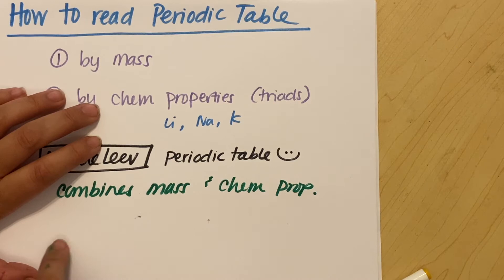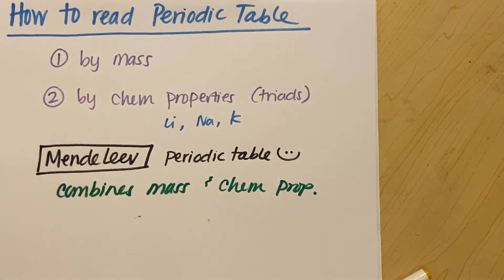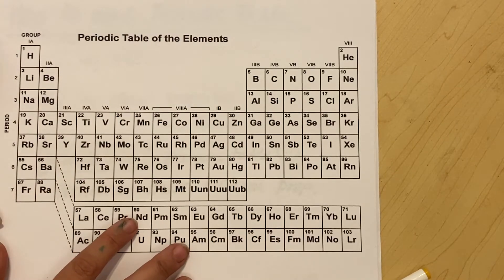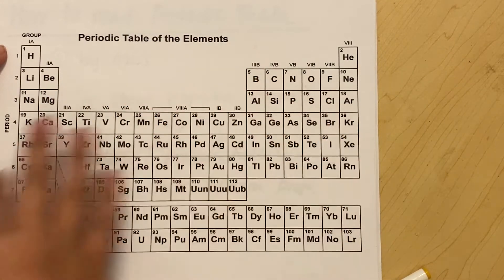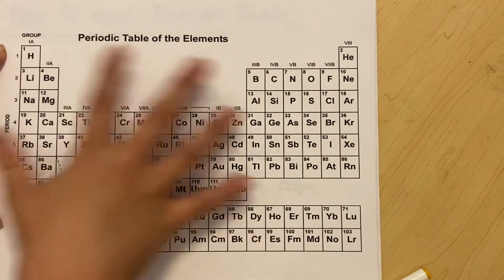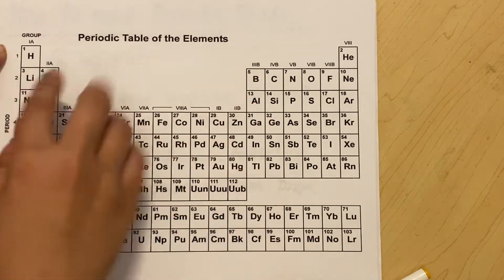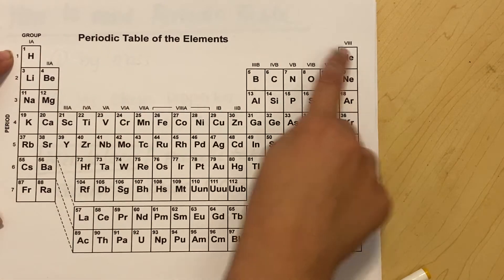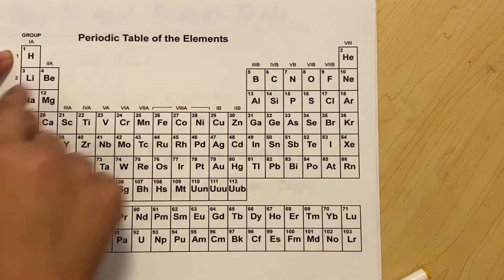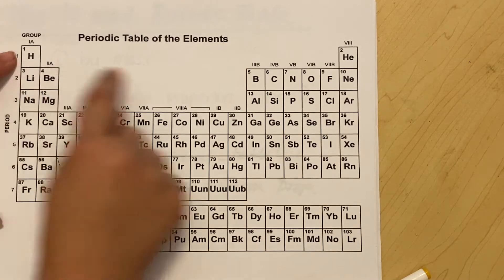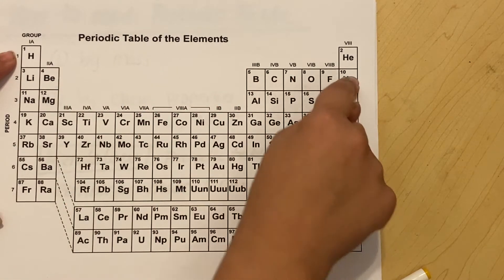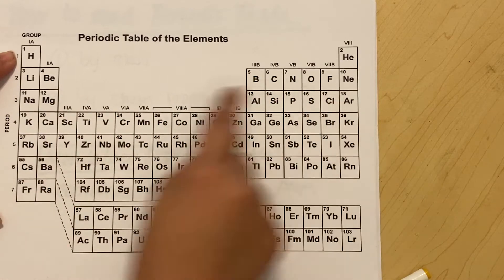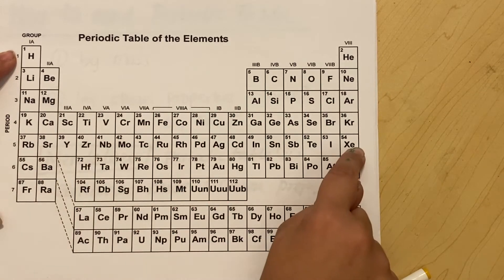As you move across the periodic table, those elements are increasing in mass. If I look at my periodic table, as I go across, everything is still increasing in mass — hydrogen to helium, lithium, beryllium. I'm increasing in my mass number as I go across, like reading a page of the periodic table.